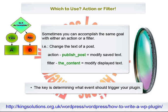Which to use — action or filter? You can sometimes accomplish the same goal with either an action or a filter. For example, if you want your plugin to change the text of a post, you might add the Action function Publish Post, so the post is modified as it is saved to the database. Or you could use a Filter function, the Content, so the post is modified as it is displayed in the browser screen.